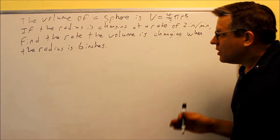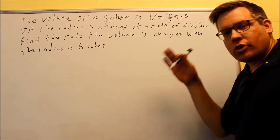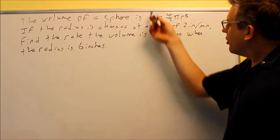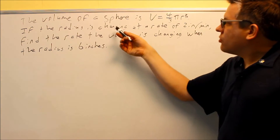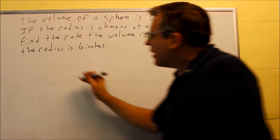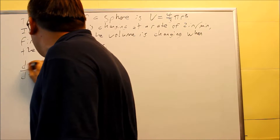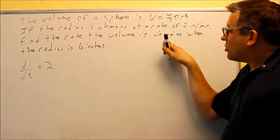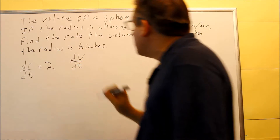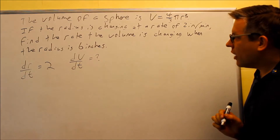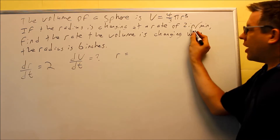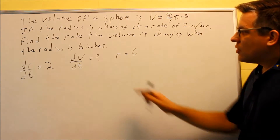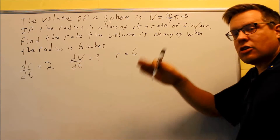Let's read through this related rates problem. We're going to write down the information, and then do some implicit differentiation with respect to time. In this case the formula has already been provided — the volume of the sphere is given. The radius is changing at a rate of 2 inches per minute, so dr/dt = 2 inches per minute. They ask us to find how the volume is changing — that's dV/dt, the unknown. When the radius is 6 inches — units match, so r = 6 inches.